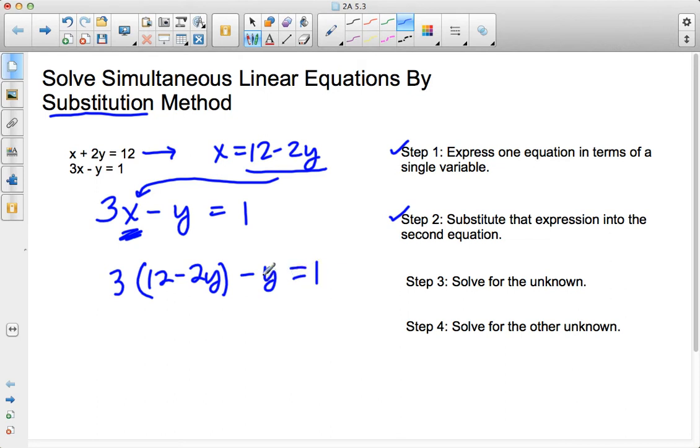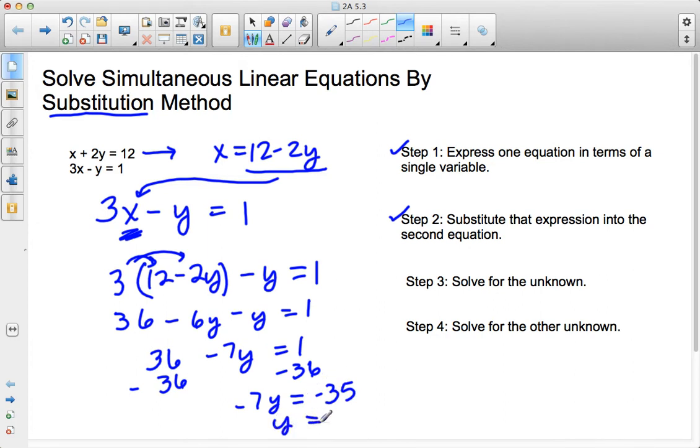So, what this did is now I can solve this equation because it is in terms of one variable. So, I have 36 minus 6y minus y equals 1. 36 minus 7y equals 1. Subtract 36 from both sides. And I get negative 7y equals negative 35 or y equals 5. So, then I solve for the unknown.